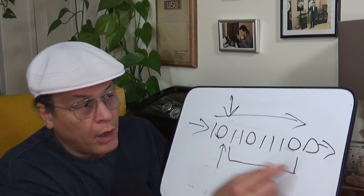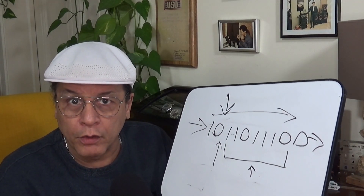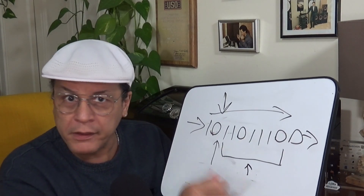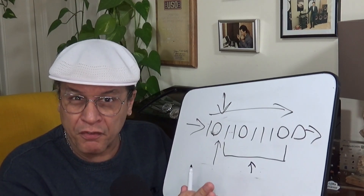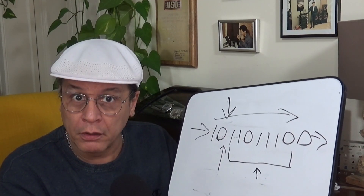In order to understand the stream of ones and zeros, both computers have to be completely in time sync. Any difference in time is called jitter.